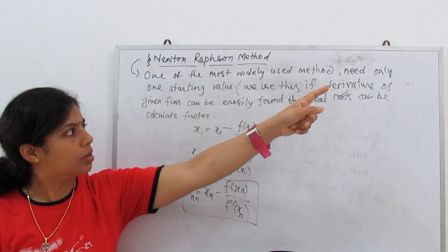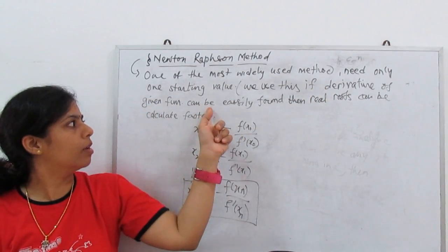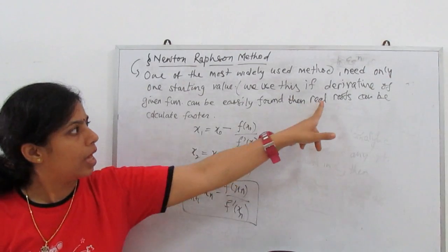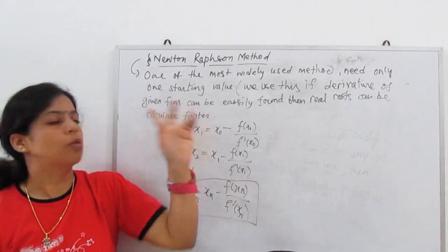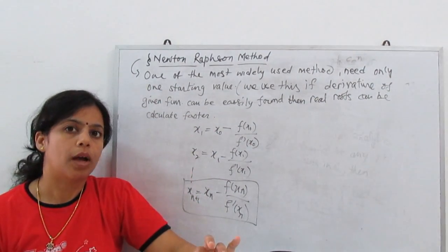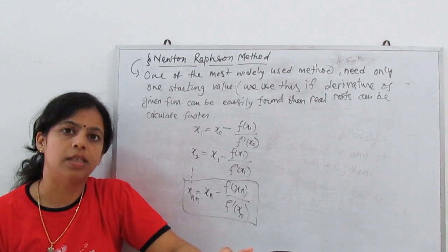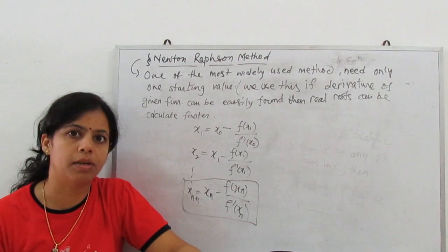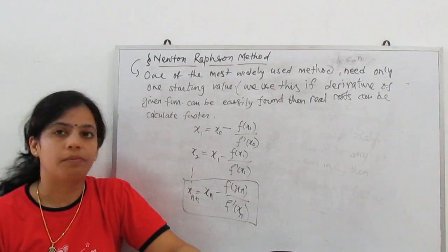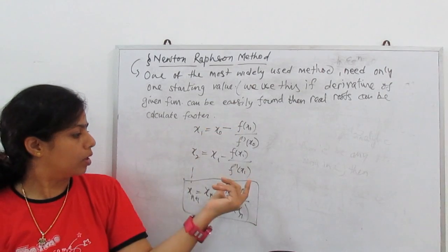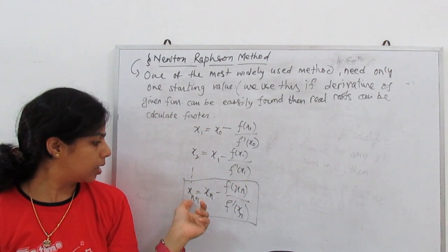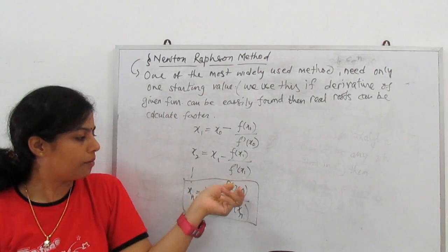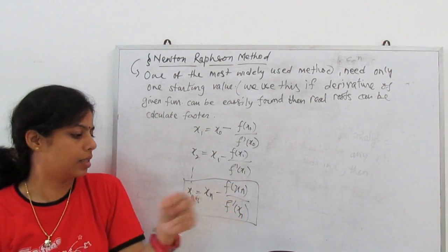We use this equation if the derivative of the given function can be easily found, then the real roots can be calculated faster. If the derivation is difficult, we don't go for this method — we use some other method. But if the derivative can be found easily, then we use this method. The general formula is: x_{n+1} = xₙ − f(xₙ)/f′(xₙ).